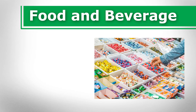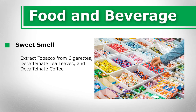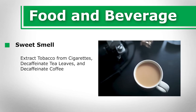Ethyl acetate in the food and beverage industry. Ethyl acetate has a sweet smell that is used to bring a fruity flavor to candy, baked goods, gum, and more. Ethyl acetate is also used to extract tobacco from cigarettes, decaffeinate tea leaves, and decaffeinate coffee.